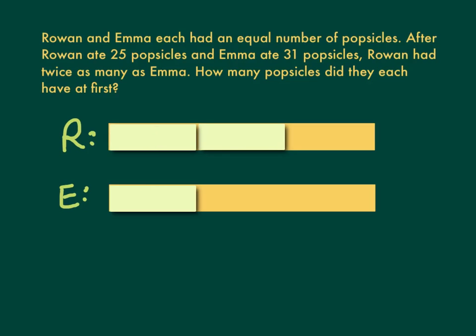Now I want to fill in how many popsicles the two girls ate. This section here represents the eaten popsicles. We're told that Rowan ate 25, and we're told that Emma ate 31.